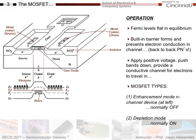At equilibrium, Fermi levels all line up and I get back-to-back PN junctions. Applying positive voltage pushes the bands down and I get a conductive channel of electrons. There are two types of MOSFETs. The device at left is an enhancement mode N-channel device — N-channel because I want electrons through the channel, making it effectively N-type. Enhancement mode is normally off, meaning with no voltage there's no current flow. Depletion mode is the opposite — it's normally on. We will focus mainly on the normally-off enhancement mode.